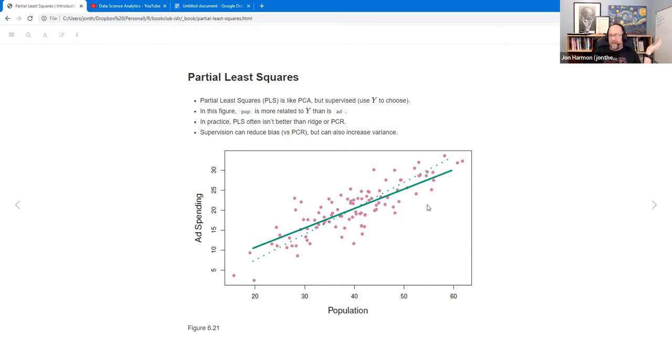They talk about in the book and also I watched the videos that they made for the first edition that it's often not any better than Ridge or PCR. And so, okay, cool. The supervision can reduce the bias versus PCR, but it increases the variance because you're using the relationship. And so you can overfit really badly, basically. Yeah, that's pretty much everything they had on PLS. Any, before we go on, any comments or questions about either of these techniques? Looks like no.